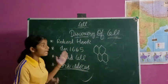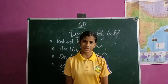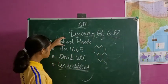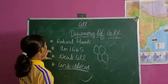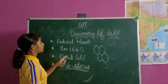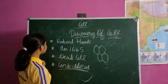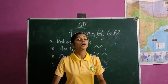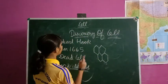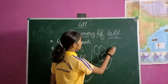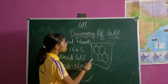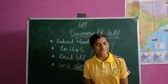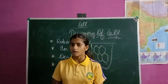So this is the discovery of the cell. It was done by Robert Hooke in 1665. When it was discovered, it was a dead cell. It was done on cork slices with the help of a microscope. And its structure when found was like a honeycomb structure.